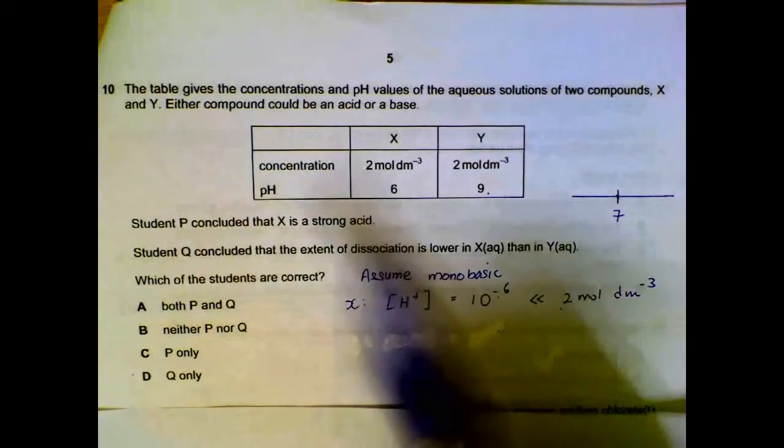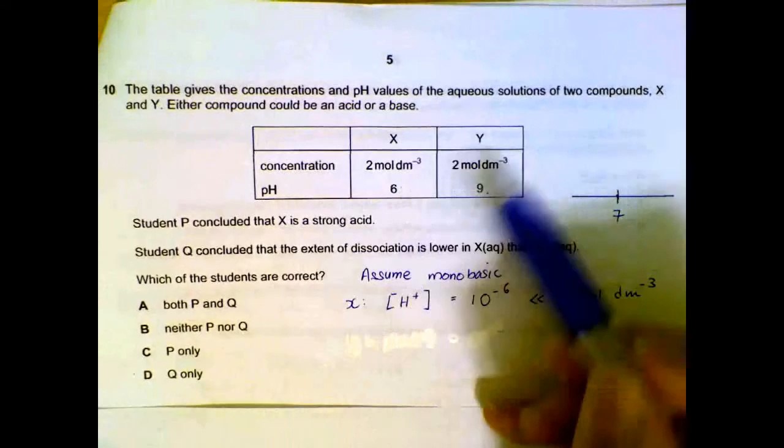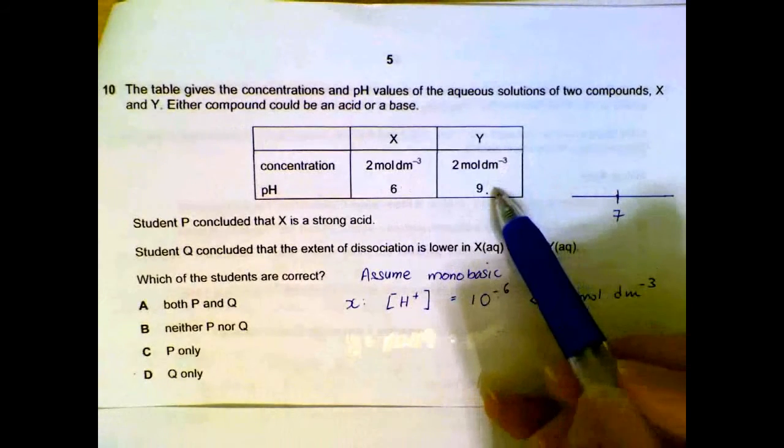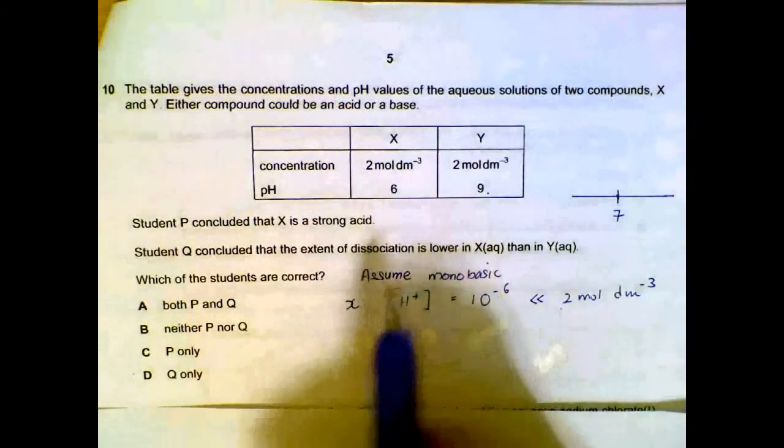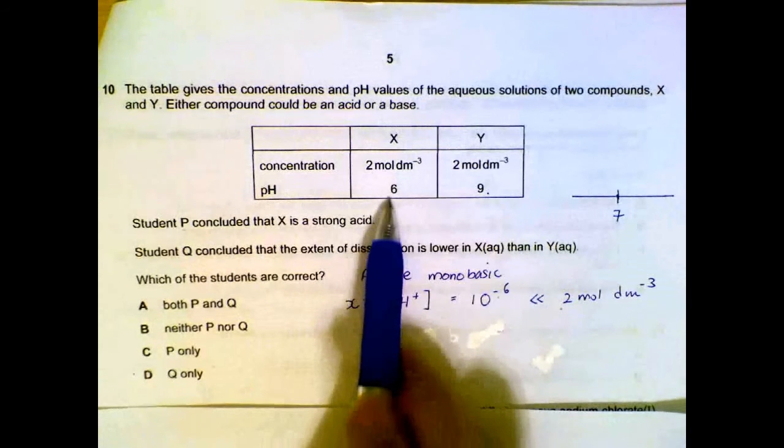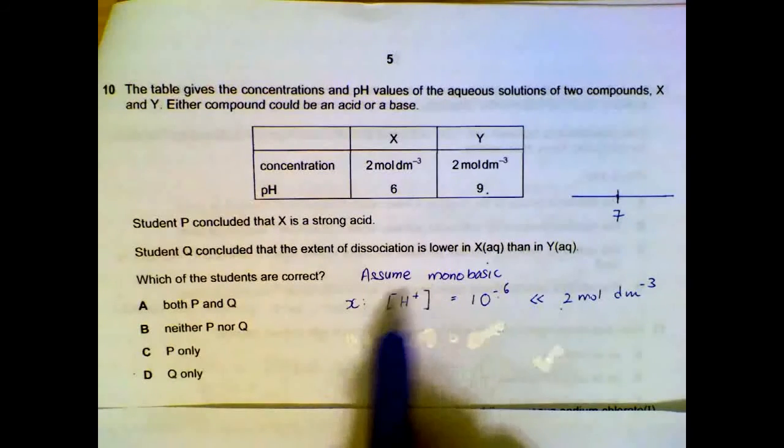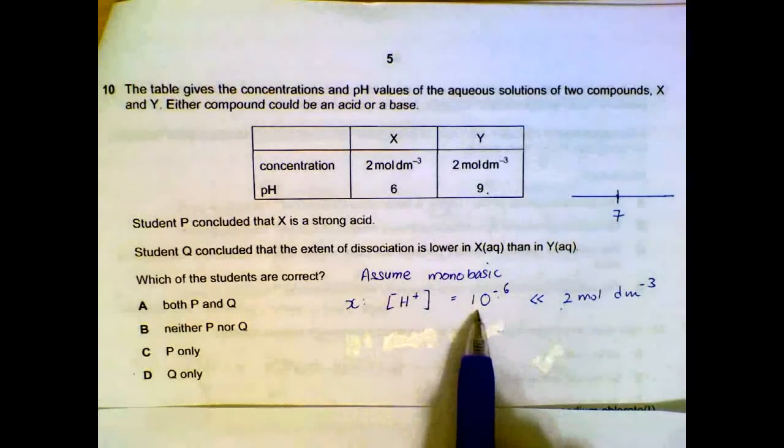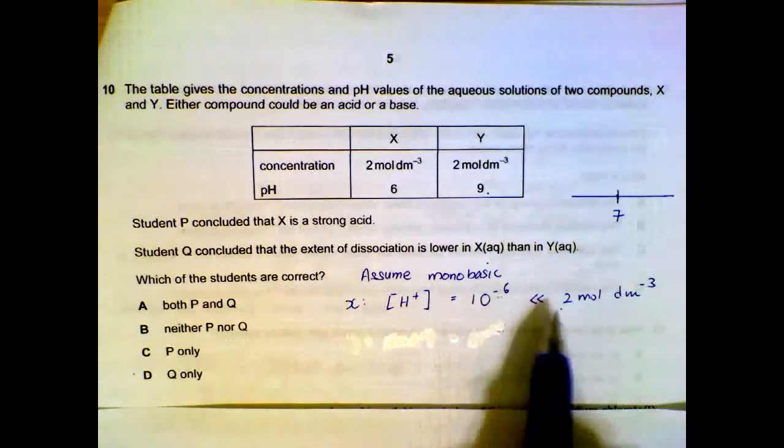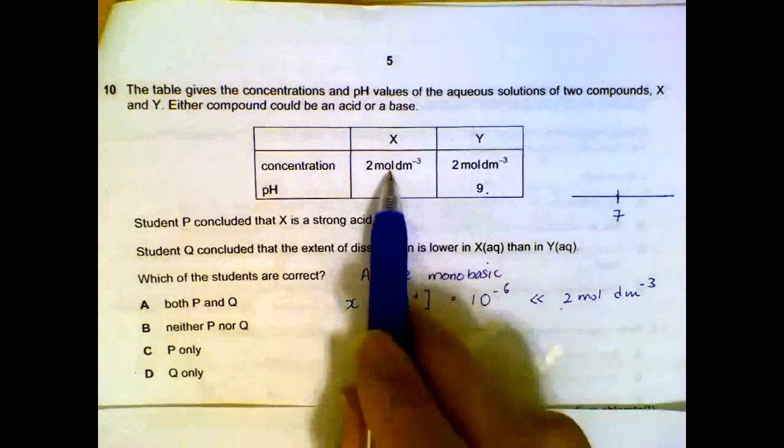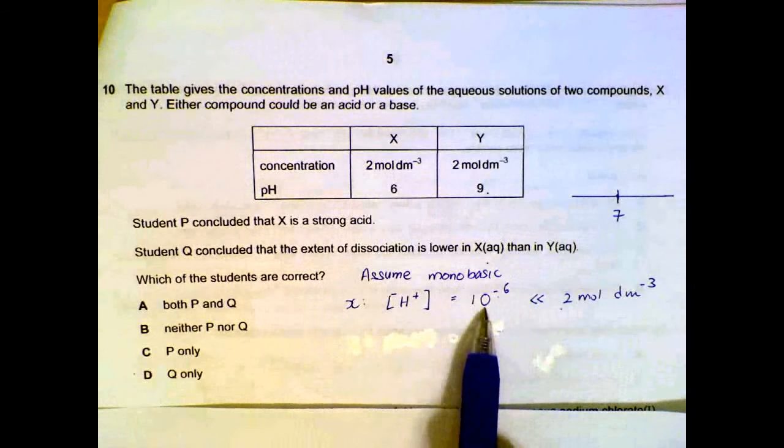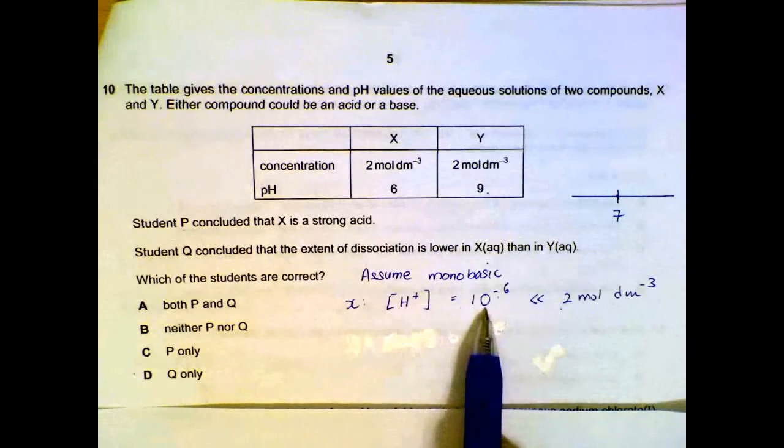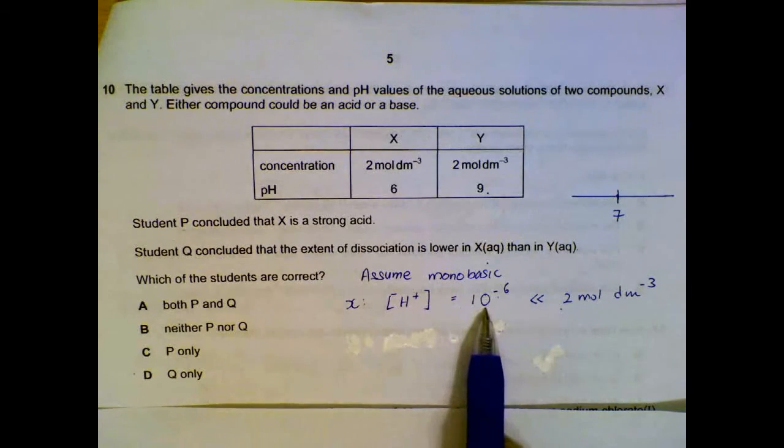Number 10. We have X which is slightly acidic and Y which is slightly alkaline. So P concluded that X is a strong acid. We can use an equation or some formulas. If it was a strong acid with a pH of 6, it means actually the concentration of H+ is 10 to the power of minus 6, which is much lesser than 2 moles per dm³. If it was a strong acid, we will expect at least 2 moles per dm³ of H+ concentration, but the H+ concentration based on the pH is only 10 to the power of minus 6, much lesser than expected. So X cannot be a strong acid.